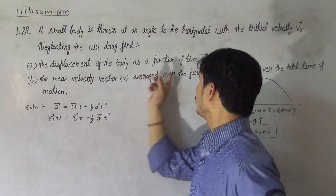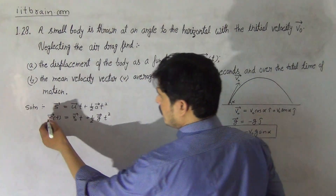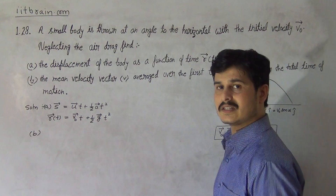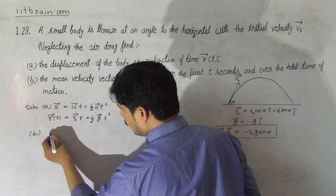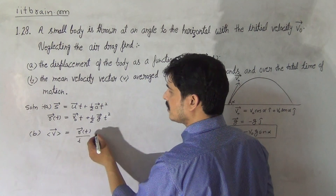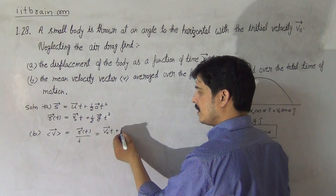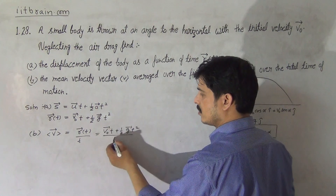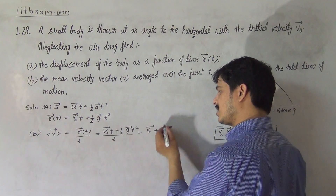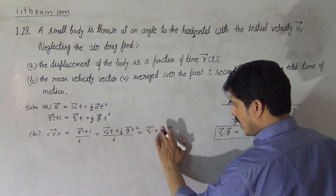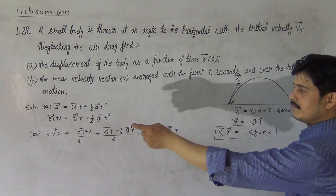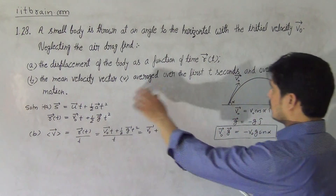The displacement of the body as a function of time is now established as part a. For part b of the problem, we need the mean velocity vector averaged over the first t seconds. Mean velocity vector is defined as total displacement divided by total time t. So it is: (v₀·t + ½g·t²) / t, which simplifies to v₀ + ½g·t.